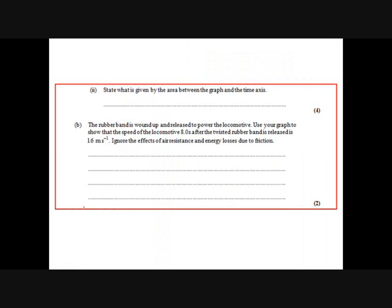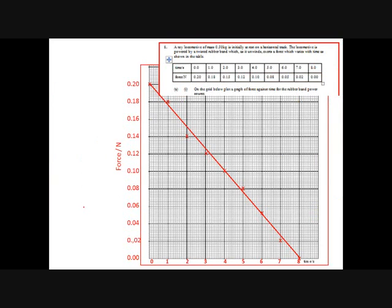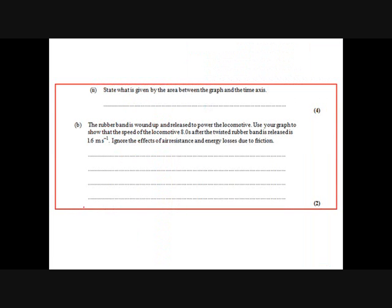State what is given by the area under the graph. Well, if we just go back, we can see this is a graph of force against time, so the area under the graph will be the integral of force with respect to time, and that is force times time, which is impulse, or impulse could be called change of momentum.